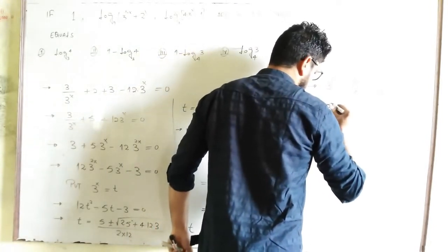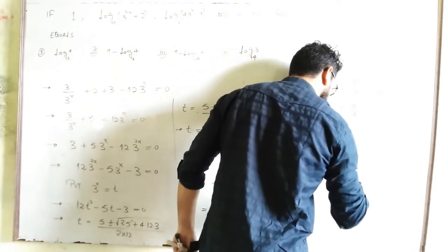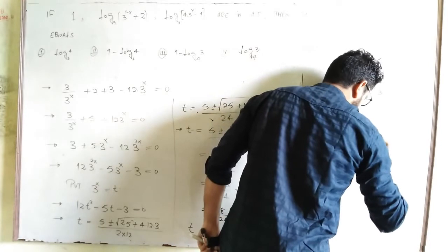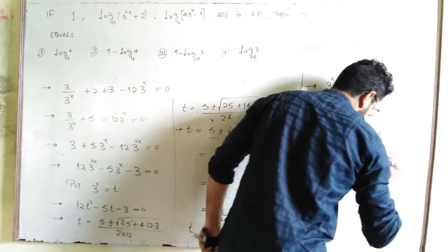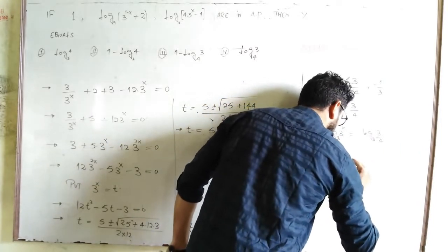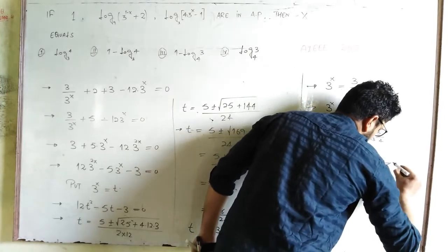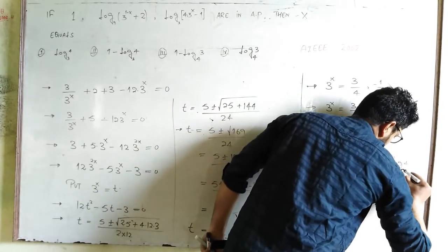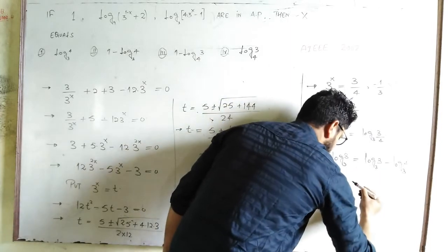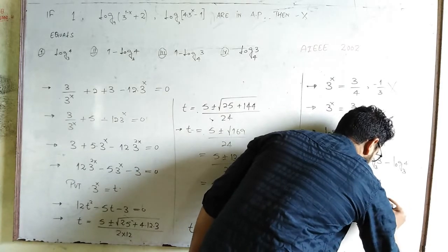Taking logarithm to the base 3 on both sides: log base 3 of 3^x = log base 3 of (3/4). Using the property, x times log₃(3) = log₃(3) - log₃(4). Since log₃(3) = 1, we get x = 1 - log₃(4).